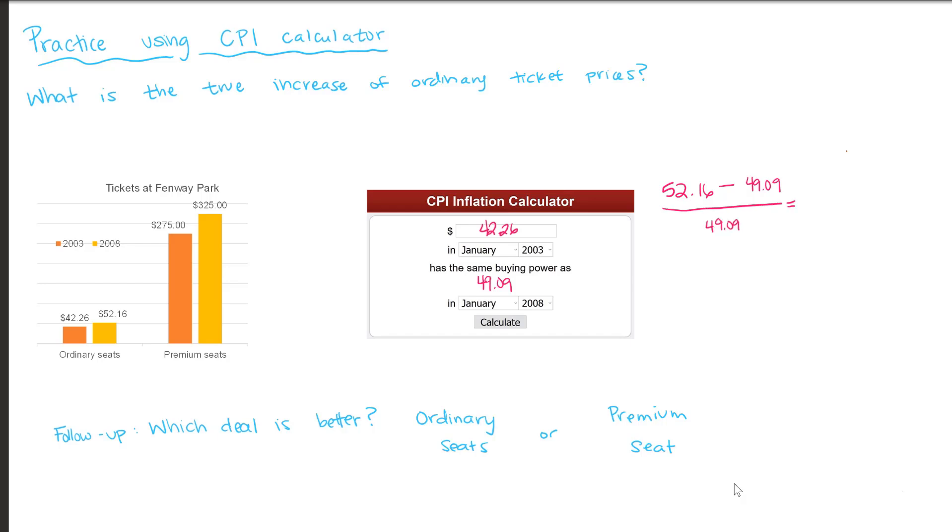So again, we can use our new minus old over old formula, where our new value is the true price of the ordinary seats in 2008, minus their true worth of $49.09. And here we get $3.07 over $49.09. And can conclude that the ordinary seats experienced a 6.25% increase. Now let's go back and look at our absolute change between the premium seats and the ordinary seats with now knowing their true worth.